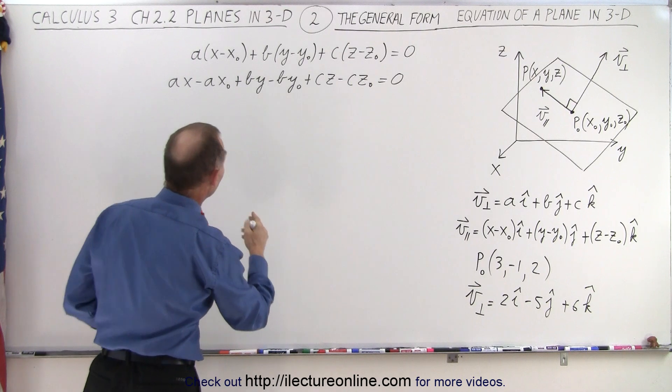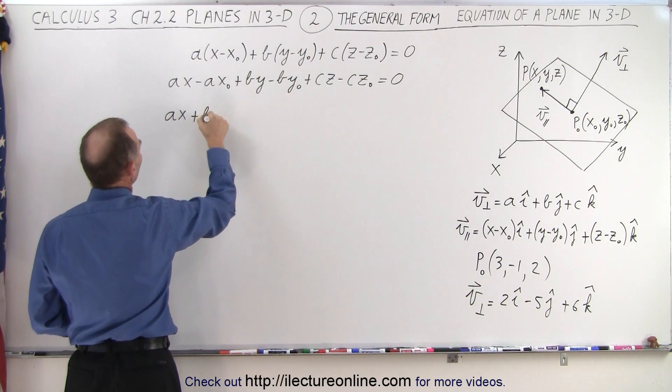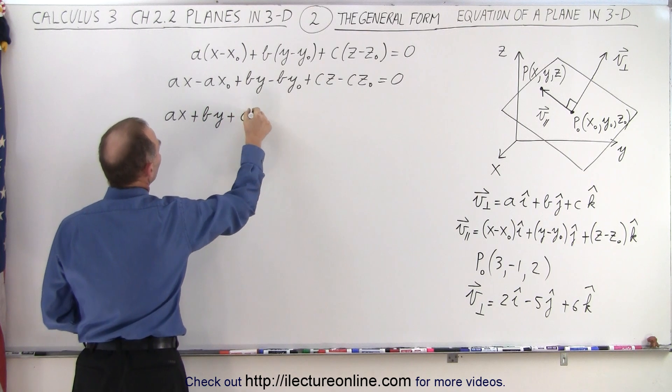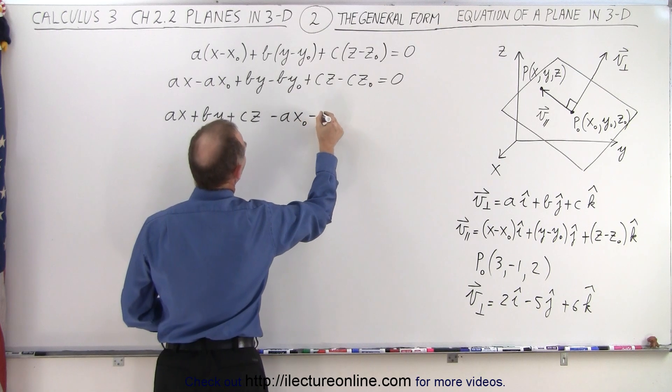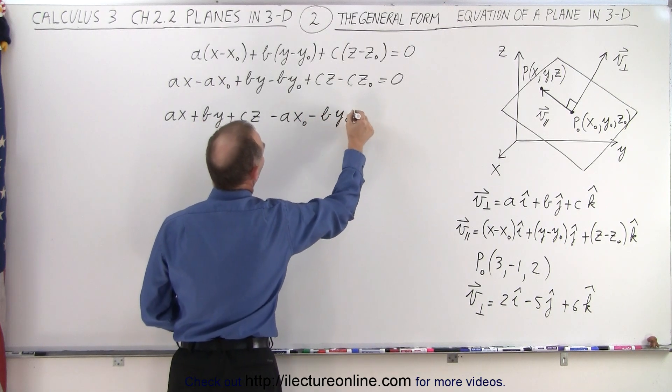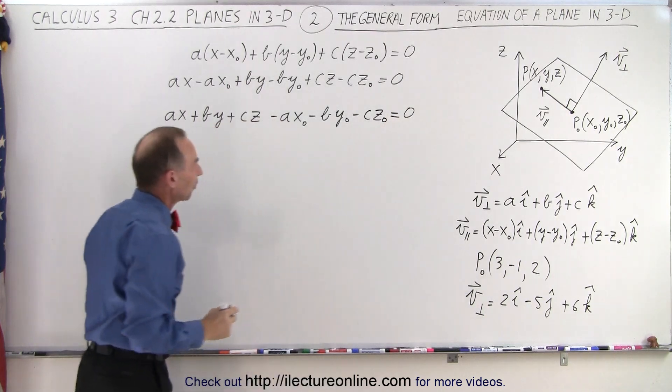Now we're going to combine terms. So here we have Ax plus By plus Cz, and then we have minus Ax sub-naught minus By sub-naught minus Cz sub-naught, and we're going to set that equal to zero.